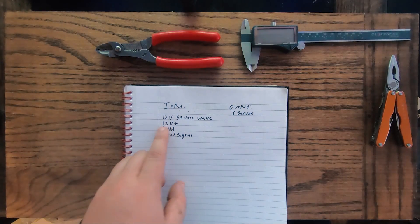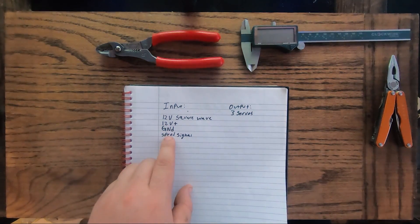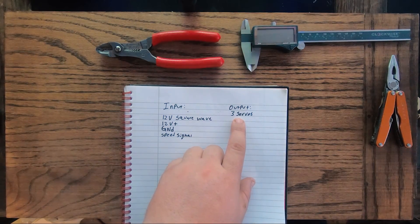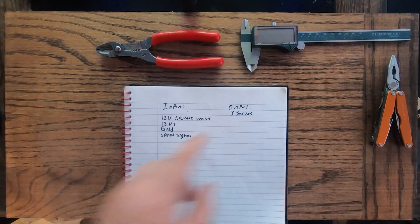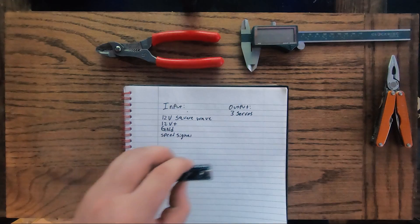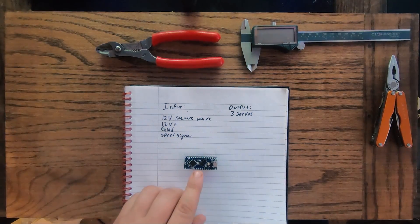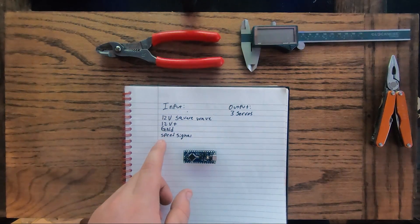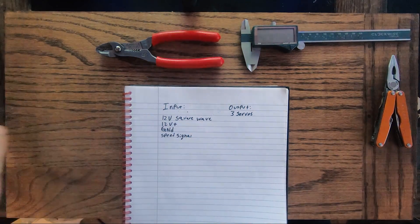I can find 12 volts positive, ground, and a speed signal I wanted. I wanted to output that to three servos, and I'll explain why we needed three here in a minute. I decided on an Arduino, a Nano Every, and you can handle all of this fairly easily with a few caveats.